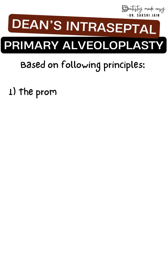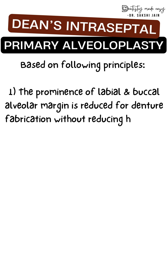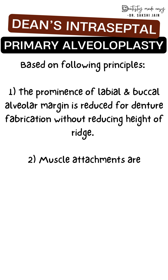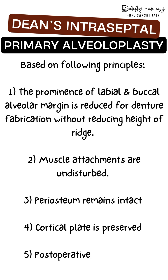It follows basic principles: the prominence of the buccal or labial surface is reduced without reducing the height of the alveolar ridge. The muscle attachment remains intact and is not lost. The periosteum remains intact, because of which there is less resorption, and the cortical plate is preserved.